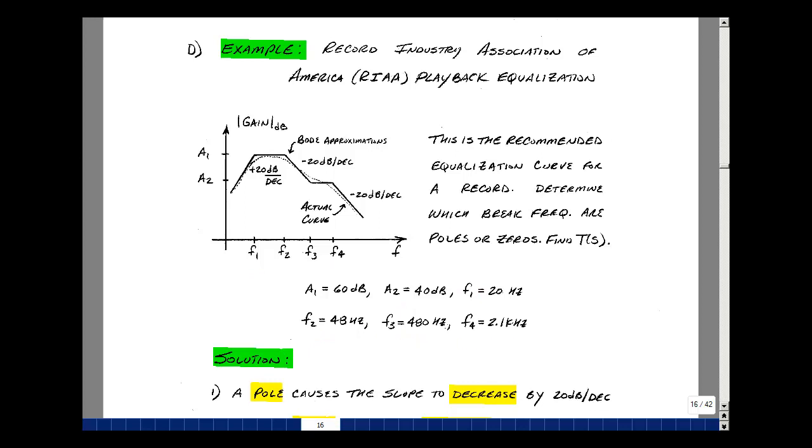Let's do the work right here on the drawing. I have a slope that's going from 20 dB per decade to 0 dB per decade. That's indicative of a pole. Going from 0 to minus 20 is again a decrease in slope, so that would again be a pole.